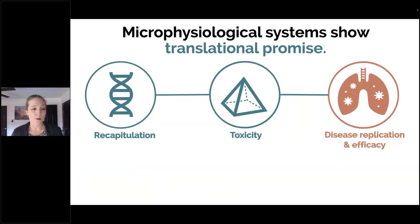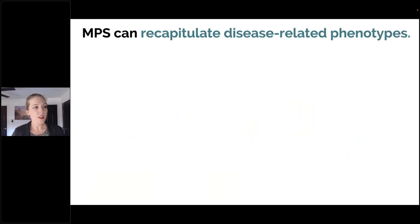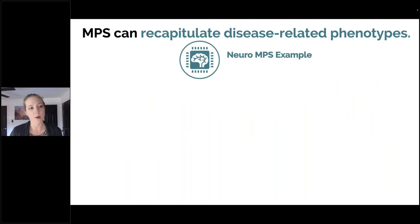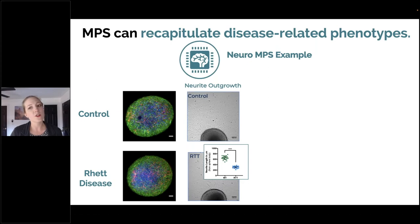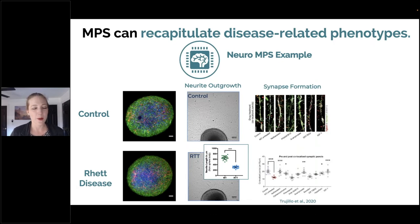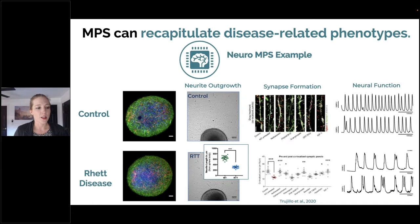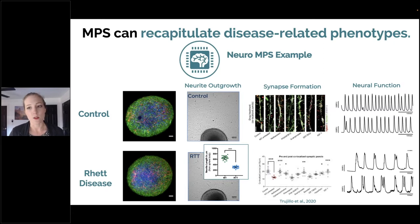MPS are also very exciting in terms of disease replication and efficacy. MPS can actually recapitulate disease-related phenotypes. In a neuro MPS example, you can see a healthy control MPS and a neuro MPS that recapitulates critical aspects of Rett disease. Looking at different features of these neuro MPS, they're different in terms of neurite outgrowth, synapse formation, and neural function. These are often diseases that haven't been super successful to model in animal models, and you can learn a lot more about them using MPS systems.